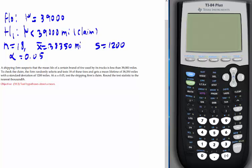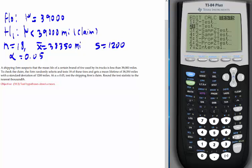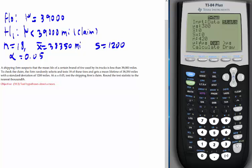I'm going to go to the calculator. The first step is to state the null and alternative. Second is to find the test statistic. Third is the p-value. Go to Stat, Test, it's a T-test. mu0 is the value in the null, which is 39,000. x-bar is 38,350. s is 1,200. n is 18. The alternative hypothesis sign is less than, make sure to select it and press enter. Then calculate.